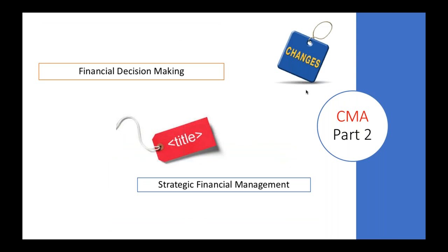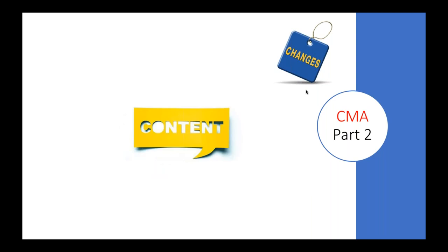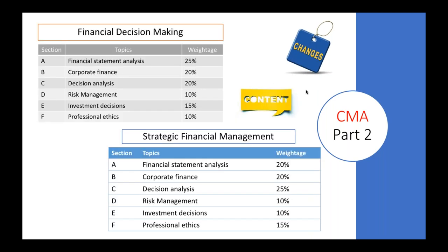The first change is the title — from Financial Decision Making to Strategic Financial Management. The content remains the same section-wise, and topic titles will remain the same. However, if you observe the weightage for Financial Statement Analysis, it was 25% and that is going to be reduced to 20%.